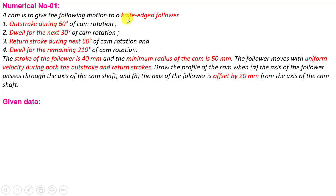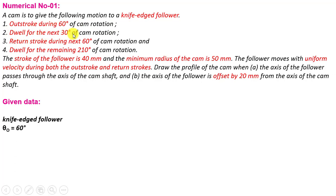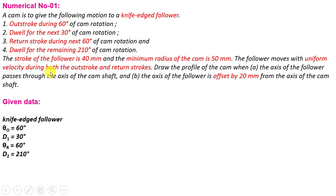A cam is to give the following motion to a knife edge follower: outstroke during 60 degrees of cam rotation (θ_O = 60°), dwell for the next 30 degrees (D1 = 30°), return stroke during the next 60 degrees (θ_R = 60°), and dwell for the remaining 210 degrees of cam rotation.